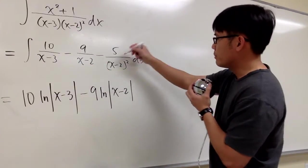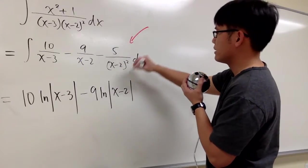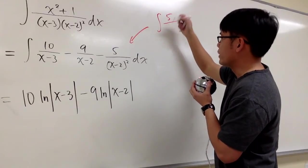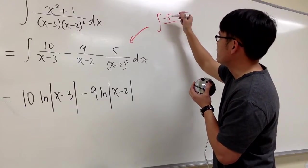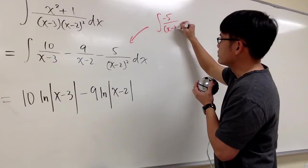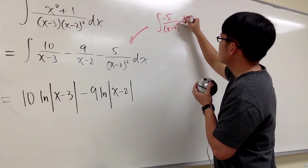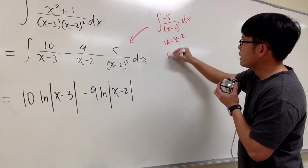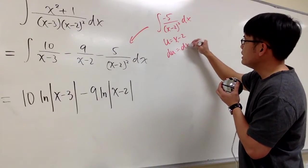But anyways, for this one, I will show you by substitutions on the side. So for the anti-derivative, the integral, let's put negative 5 over x minus 2 squared dx. I will do some substitutions. So let's say u equal to x minus 2. du will be the same as dx.